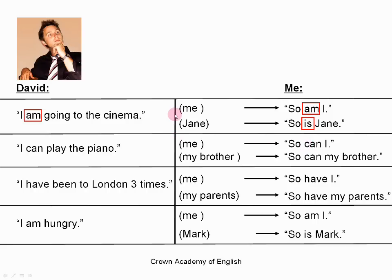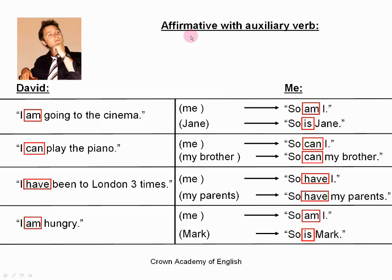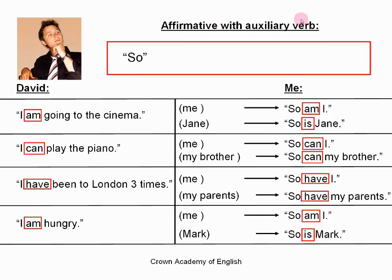The same applies for the other examples. The auxiliary verb 'can' is used in 'so can I' and 'so can my brother.' For 'have,' we say 'so have I' and 'so have my parents.' 'I am hungry' gives us 'so am I' and 'so is Mark.' So the rule is: when agreeing with an affirmative that has an auxiliary verb, the form is: so + auxiliary verb + subject.